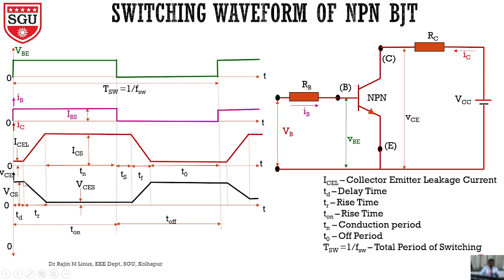We already know: if a switch starts to conduct, the voltage across the switch will be 0 and the current flowing through it will be maximum. In ideal cases that is the behavior, but in practical cases a small amount of leakage current flows during on time, and during off time there will be a small voltage drop across the collector-emitter due to leakage current. During the rise time, the voltage across collector to emitter starts to reduce and current starts to increase.